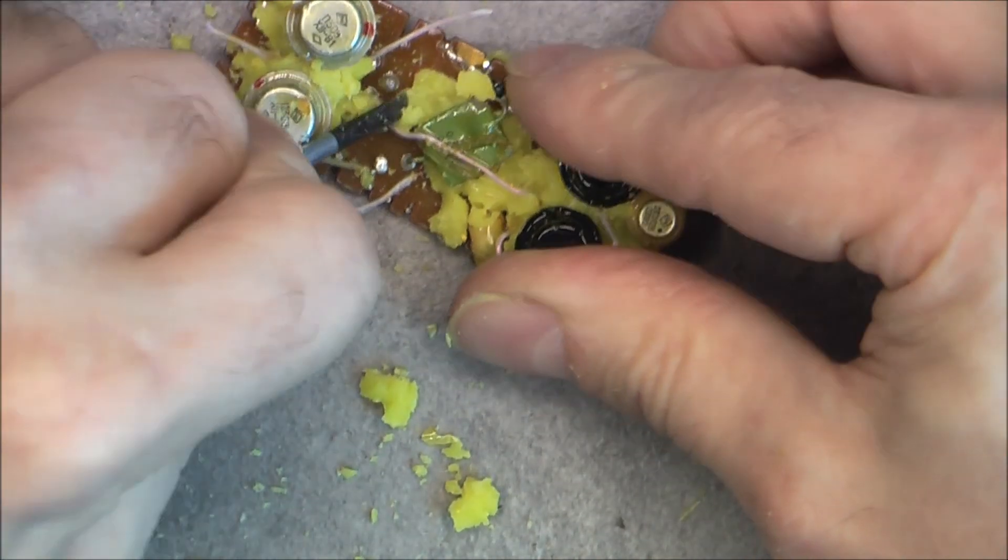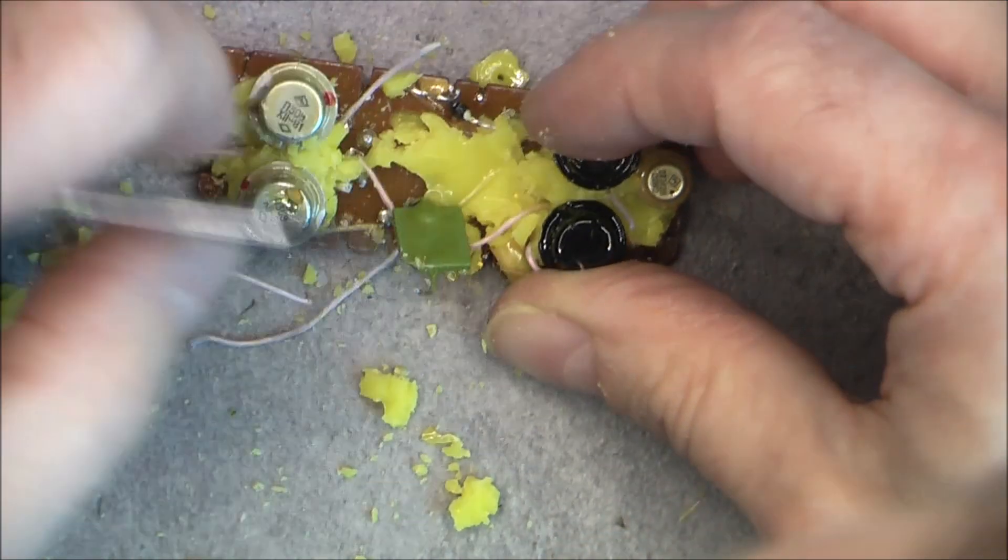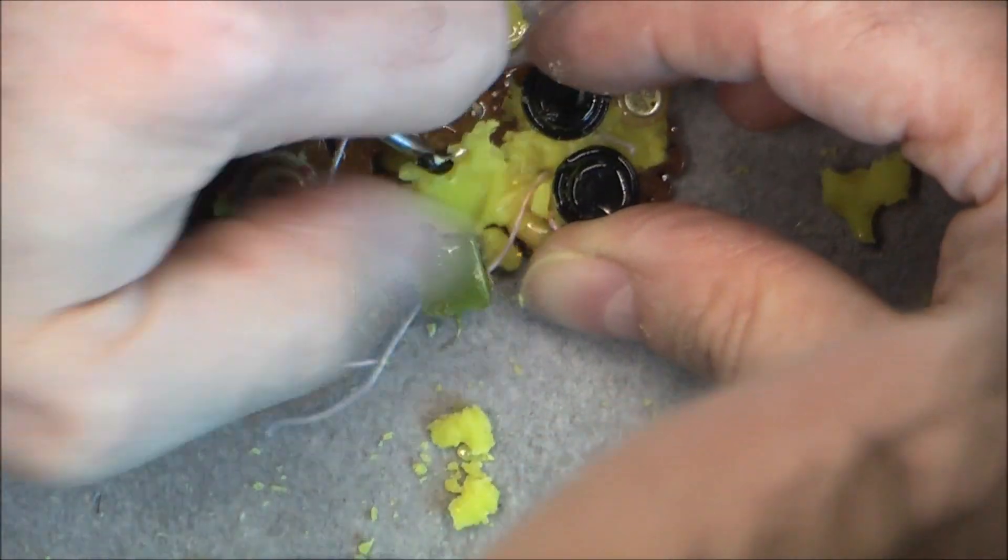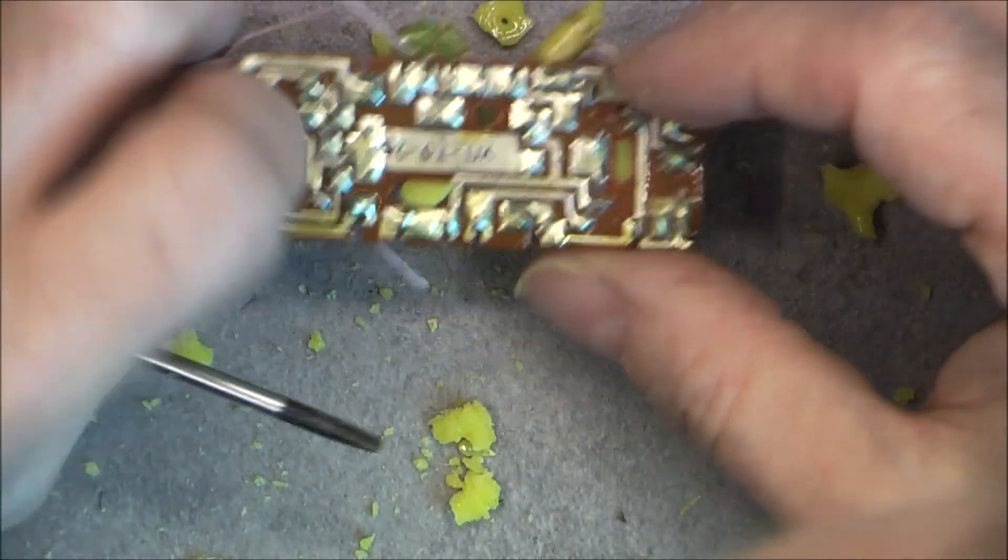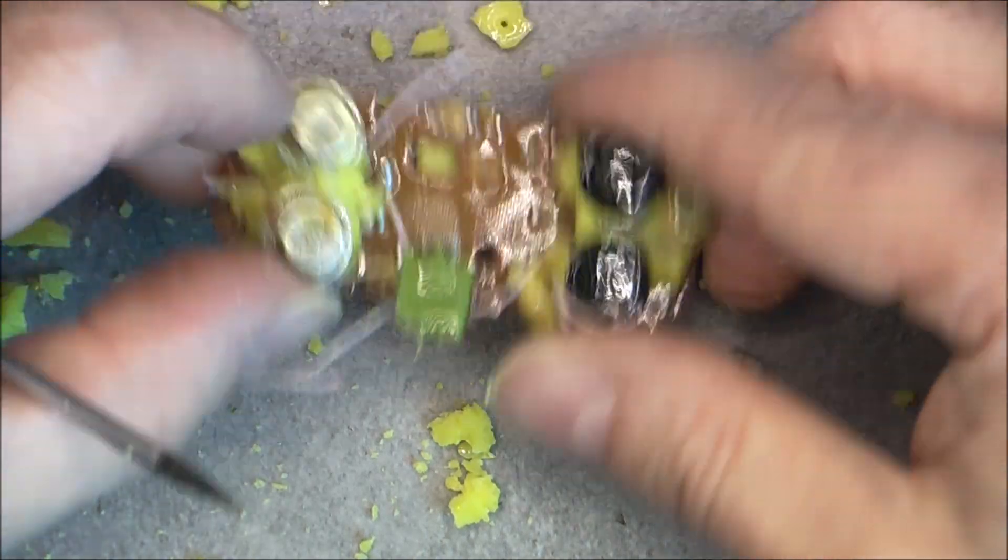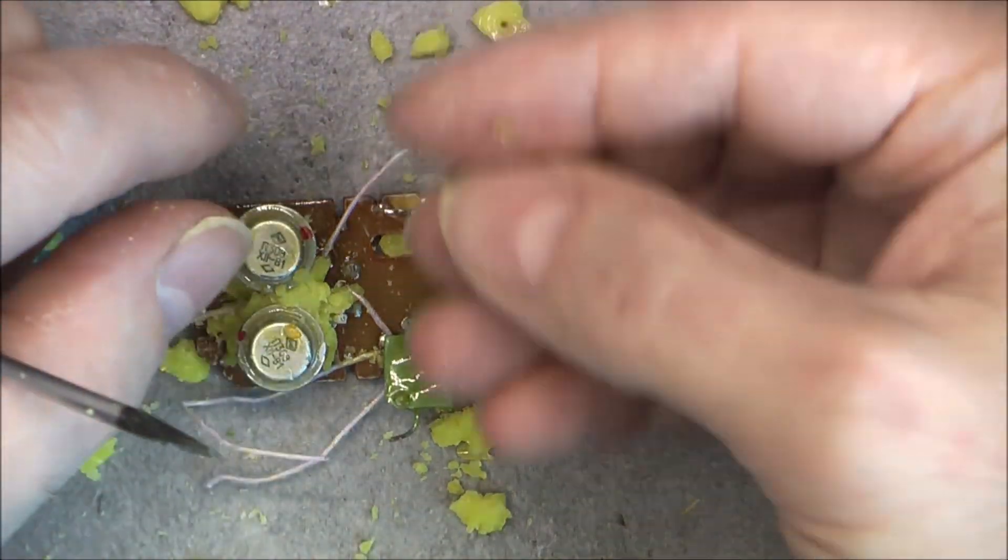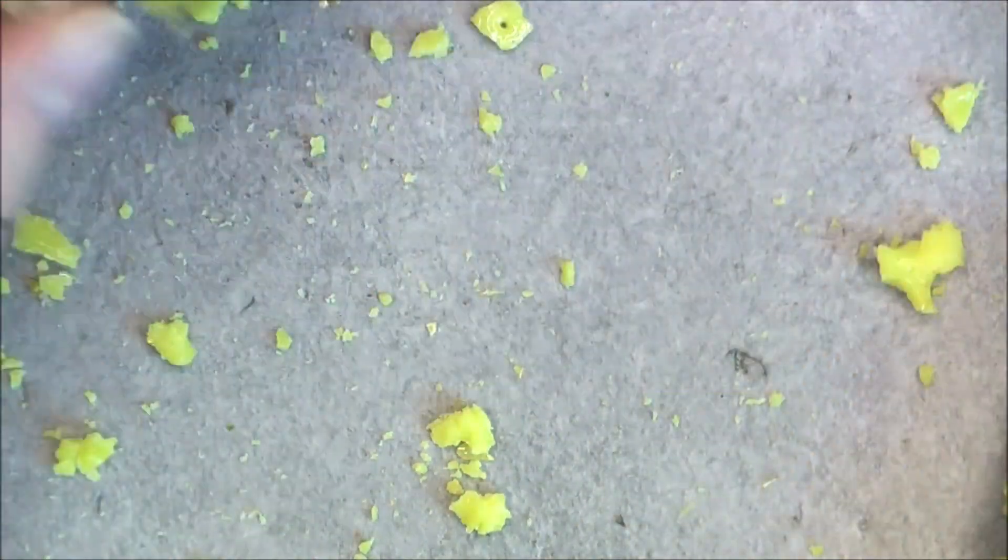So I will probably try to save at least the transistors here, try to unsolder them and save them. Here a little black diode. So here we are for this side.